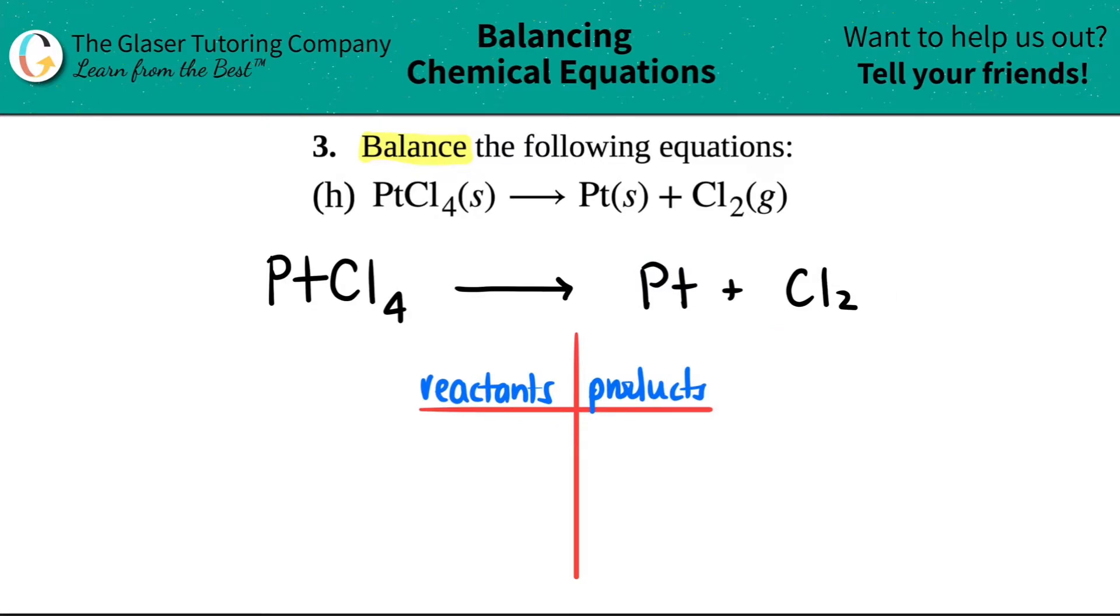When we do our chart, we list all the elements. You're going to break down your compounds into individual elements. I only see two elements: Pt and Cl. I'm going to list them—Pt and Cl. Now you're going to replicate it so everything is nice and neat. I have Pt on the top here and Cl on the bottom.